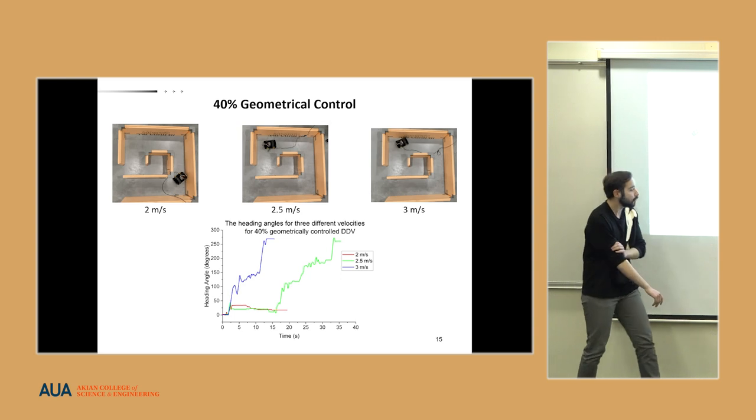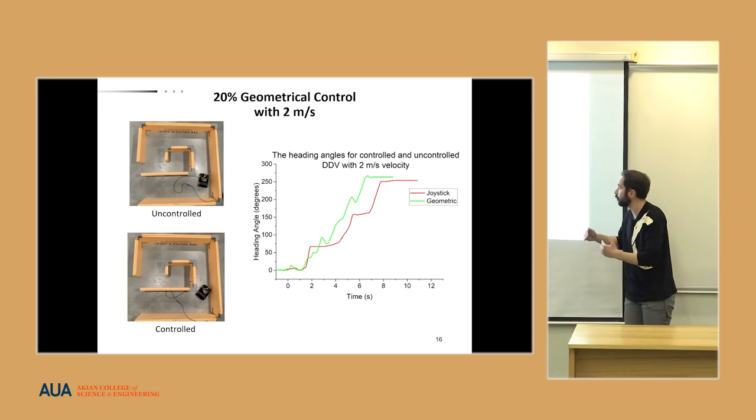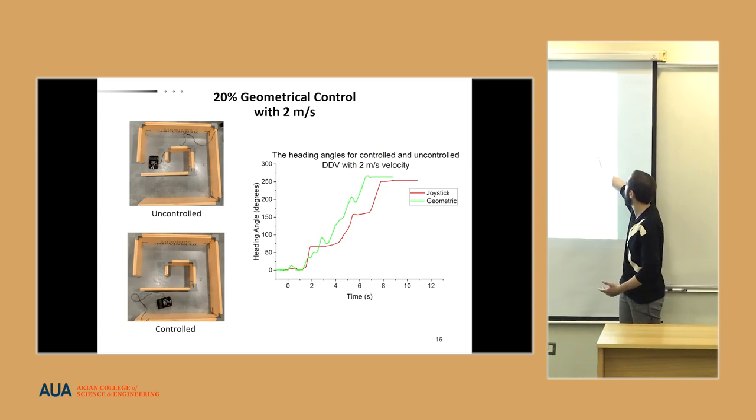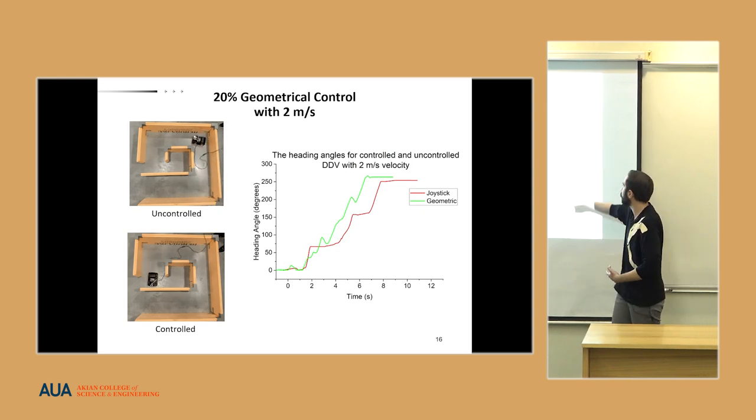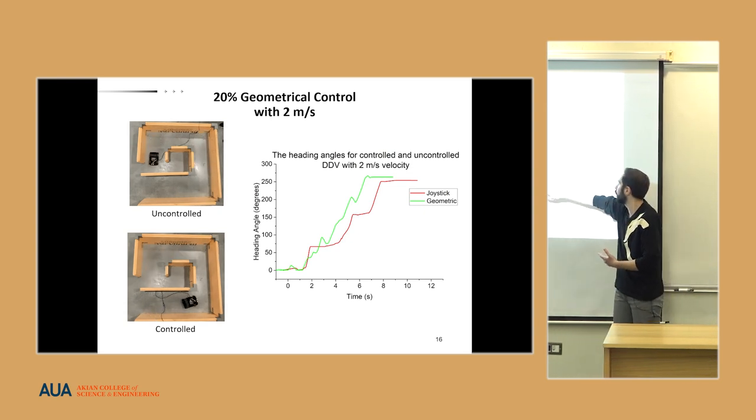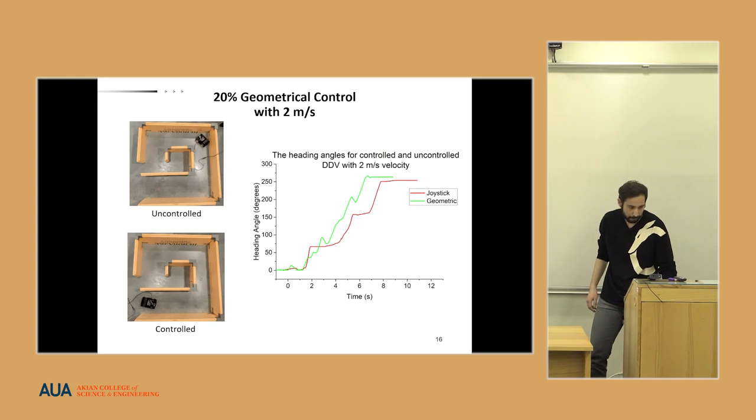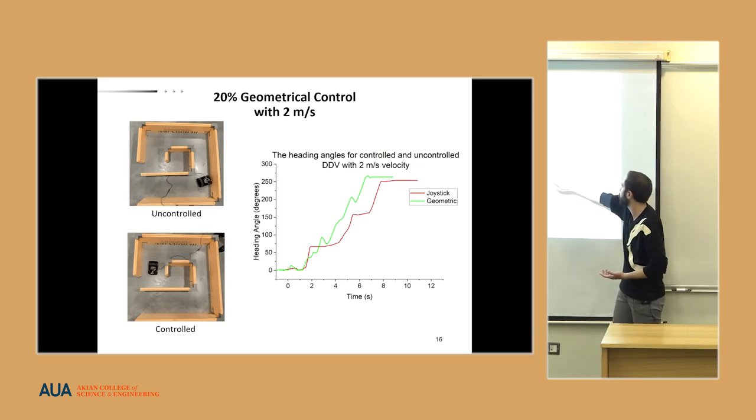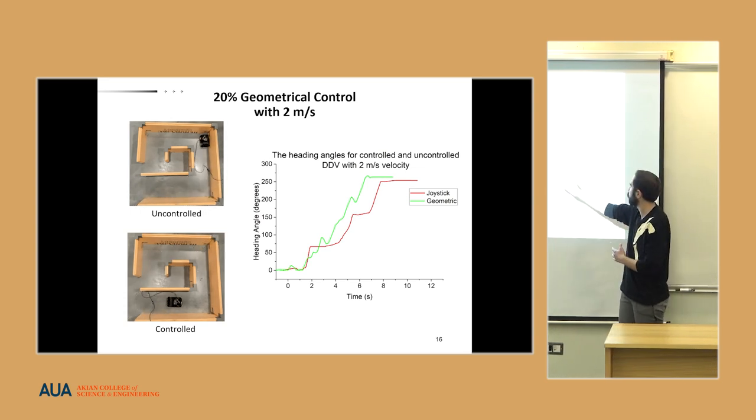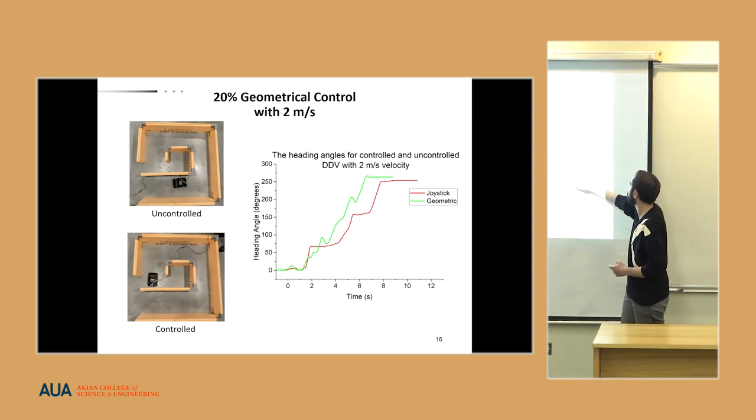Talking about the difference between controlled and uncontrolled, we can see that with two meters per second and the joystick, we have sharp increases, as the user has to stop the vehicle to make a turn. However, with the geometrical controller, it takes smoother increases and reaches faster to the endpoint rather than by joystick. As we can see with three meters per second, we have slightly smoother increases with these heading points showing the sharp turnings of the DDV, and it also reached faster than it was done by joystick.